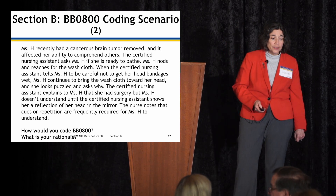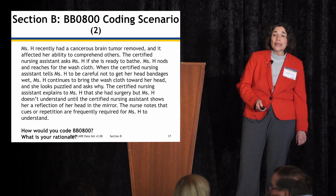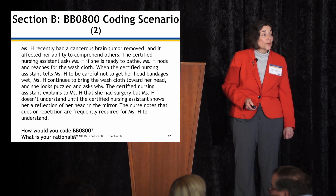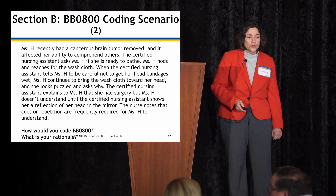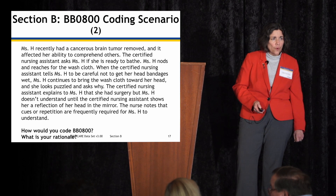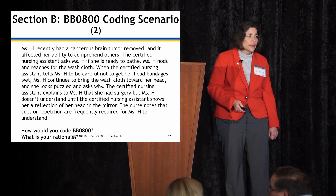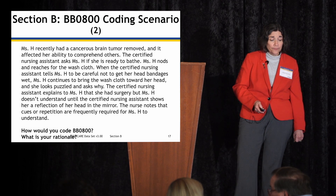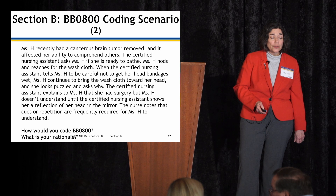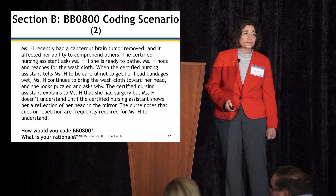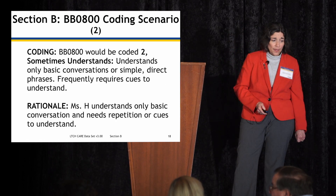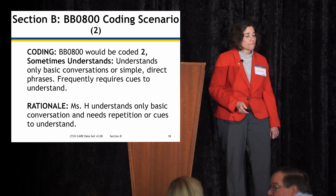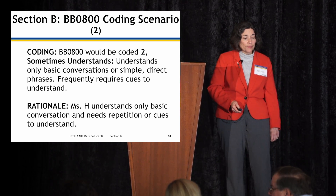Second scenario for BB0800: Ms. H recently had a cancerous brain tumor removed and it affected her ability to comprehend others. The CNA asks Ms. H if she's ready to bathe; Ms. H nods and reaches for the washcloth. When told not to get her head bandages wet, Ms. H continues toward her head looking puzzled. The CNA explains she had surgery, but Ms. H doesn't understand until shown a reflection in the mirror. The nurse notes that cues or repetition are frequently required. The answer is code 2 — sometimes understands — because Ms. H understands only basic conversation and needs repetition or cues to understand.